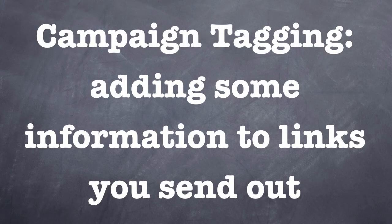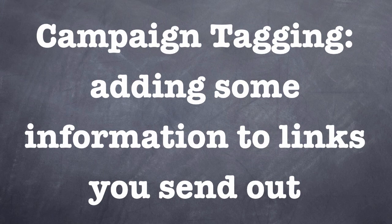There you have an introduction to campaign tagging — adding a bit of information to the links that you send out by email or social media. That gives Google Analytics a lot more information about who's clicking on those links and what they're doing once they come to your website. It really is the most powerful technique you can use in Google Analytics when doing online marketing. This, along with the next tutorial on segments, really shows you the effectiveness of your online outreach.